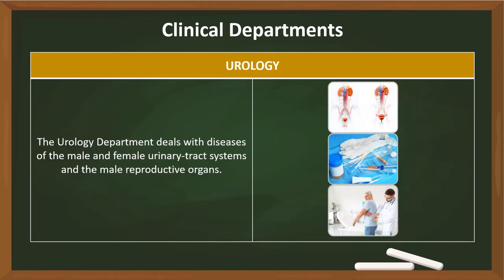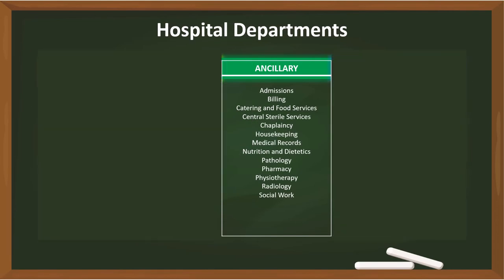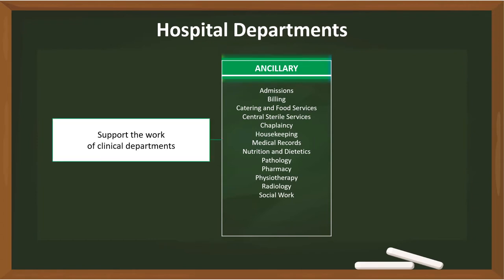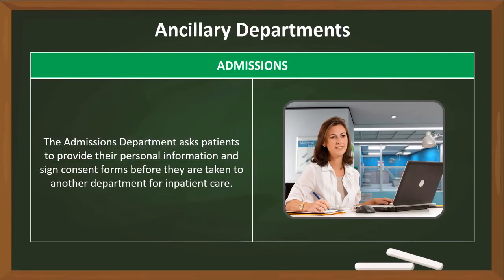The department of surgery administers treatment of injuries or diseases by cutting open the patient's body and removing or repairing the damaged parts. The urology department deals with diseases of the male and female urinary tract systems and the male reproductive organs.